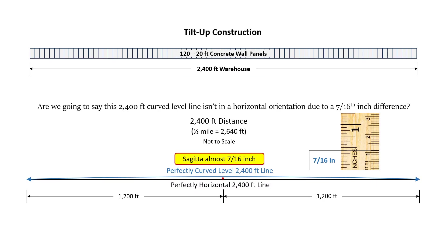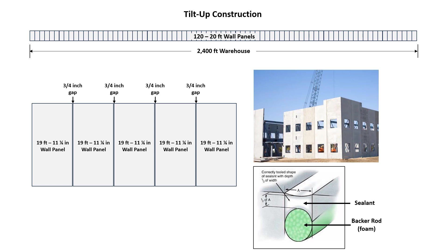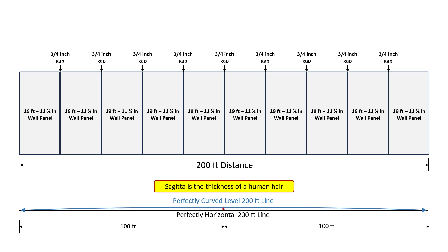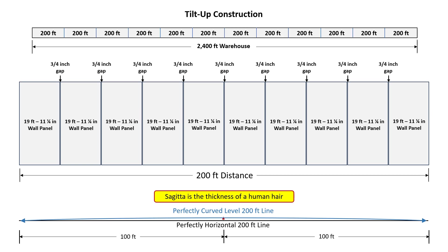Even a 7/16-inch sagitta for a 2,400-foot long warehouse is not going to be a problem. If you look above and we had wall panels that were 20 feet wide, that would be 120 panels along that wall. The panels are placed with a 3/4-inch gap between them, and this is filled with a sealant that acts as an expansion joint. For a 200-foot distance, the sagitta is the thickness of a human hair, so you could say there is literally no curvature at all. We can look at that warehouse as being twelve 200-foot segments built end to end — each 200-foot segment really has no curvature to speak of. But yes, over that distance, that warehouse would be following the curvature of the earth, and there is really no limit to how long you could make this building.